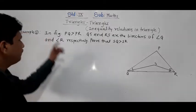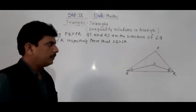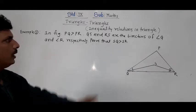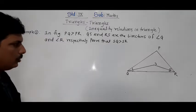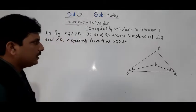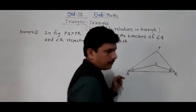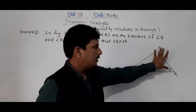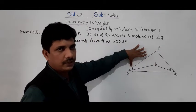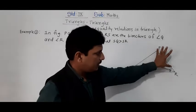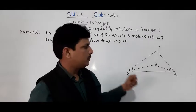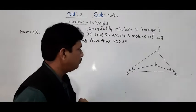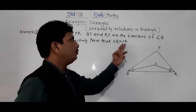Example number 2: In the figure, PQ is greater than PR. QS and RS are the bisectors of angle Q and angle R respectively. Prove that SQ is greater than SR. From the figure, if PQ is greater than PR, then the opposite angle of side PQ — which is angle R — is greater, and the opposite angle of side PR is angle Q. So angle PRQ is greater than angle PQR.